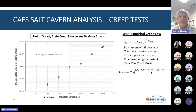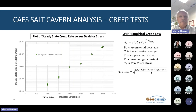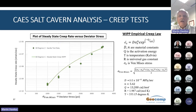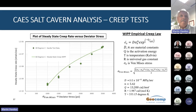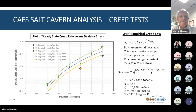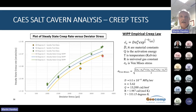Eight other tests were performed at the same temperature and confining stress but with different deviator stresses. The plot shows the relationship between log creep rate and deviator stress at 60 degrees Celsius — the creep rate increases with deviator stress. The parameters D and N are determined by curve-fitting to the data using the WIPP creep equation. The parameter Q varies by material and is 13,200 calories per mole for rock salt; R is the universal gas constant. A few tests were also performed at 40 and 50 degrees Celsius, showing that creep rate increases with temperature.